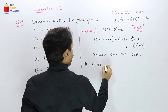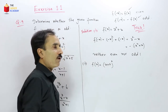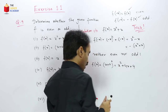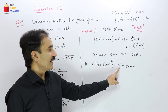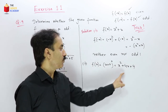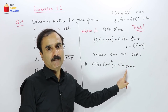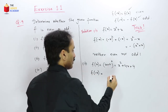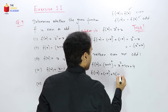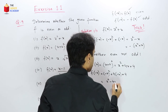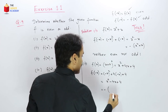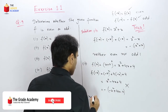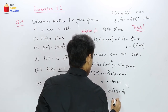For f(x) = (x+2)² = x² + 4x + 4: powers are 2 (even), 1 (odd), and 0 (even) — mixed. Checking: f(−x) = x² − 4x + 4, which does not equal f(x) or −f(x). So again neither even nor odd.